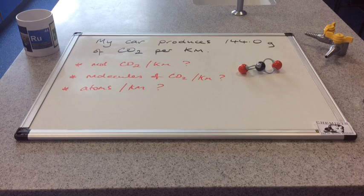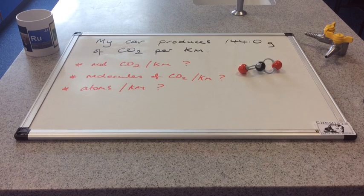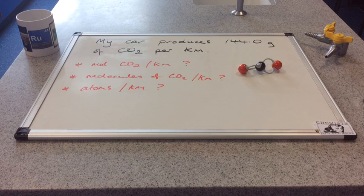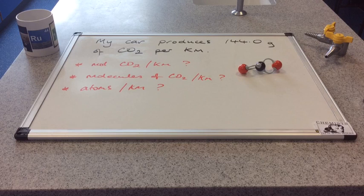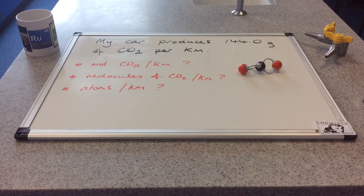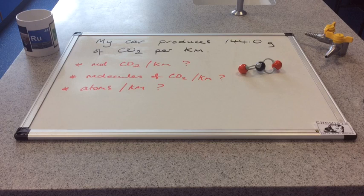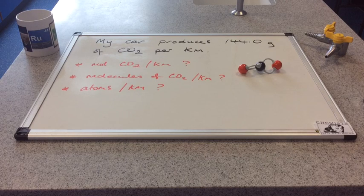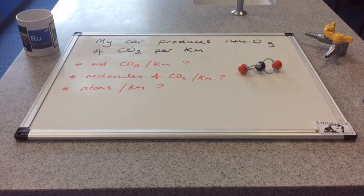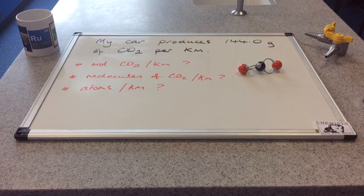We'll finish with this question. So I've just found the emissions data for my car. So it produces 144 grams of carbon dioxide for every kilometer that I drive. So using what you've learned so far from the video, can you work out the moles of carbon dioxide per kilometer, the number of molecules of carbon dioxide made per kilometer, and how many atoms per kilometer that would equate to. So pause the video, have a go at the calculations and then play and see if you get them right.